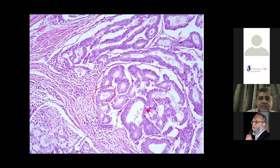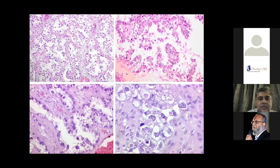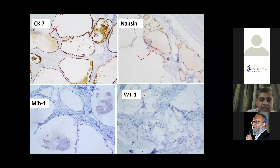Clear cell carcinoma — as the name suggests, the cytoplasm is very clear. You can see very empty-looking cytoplasm in many of these cells, which is what happens in clear cell adenocarcinoma. The most important IHC to pick this up is Napsin A — a marker for clear cell adenocarcinoma. Mind you, it is also positive for CK7, just like serous cancer, so you should have Napsin A in your armamentarium to pick up clear cell. Clear cell carcinoma is negative for WT1, and MIB1 index can show the proliferative activity of these tumor cells.